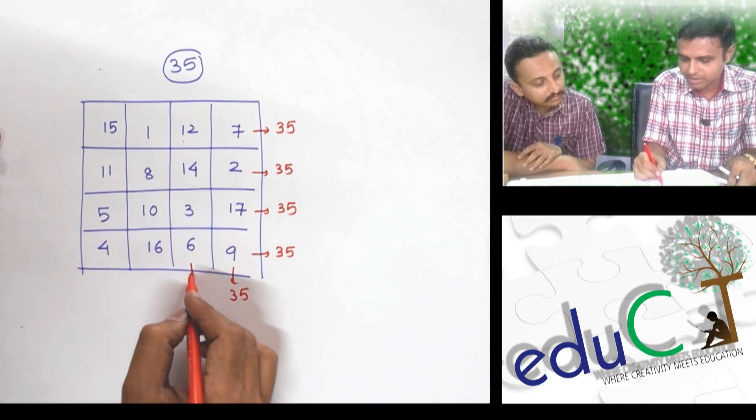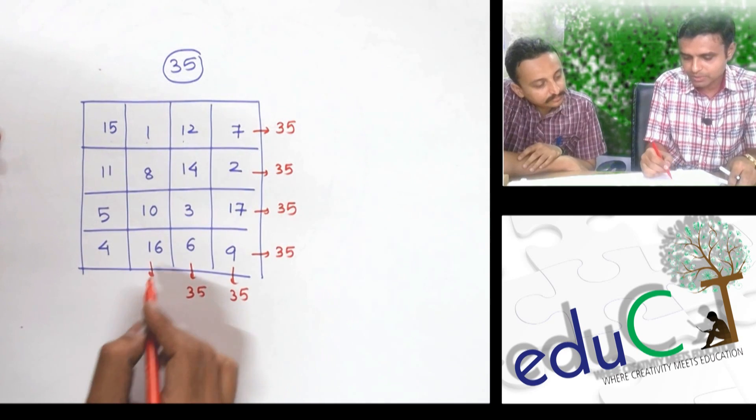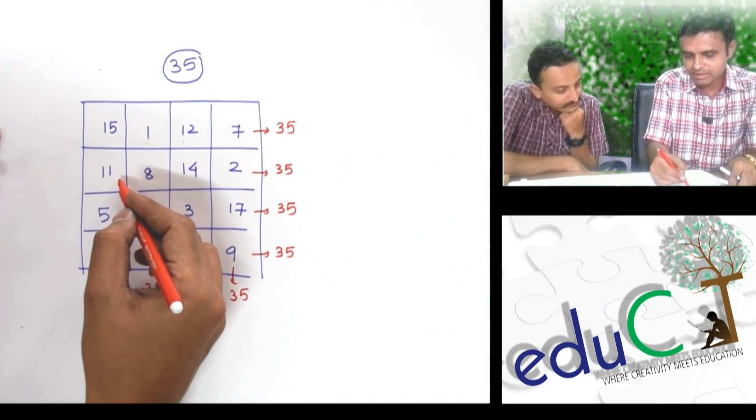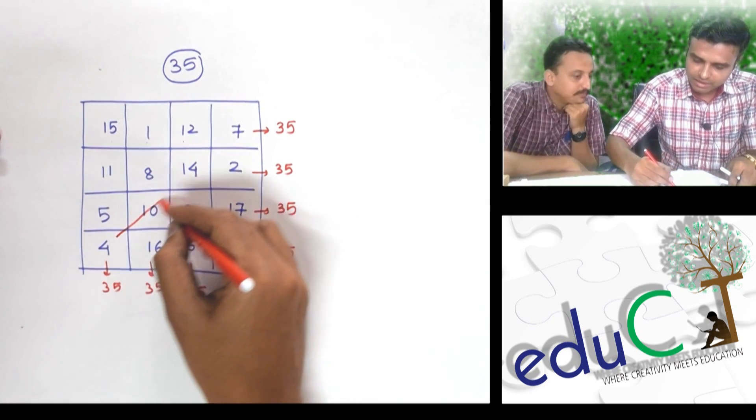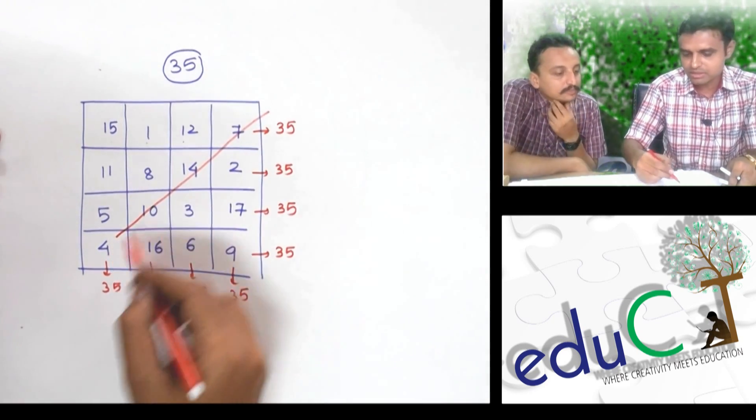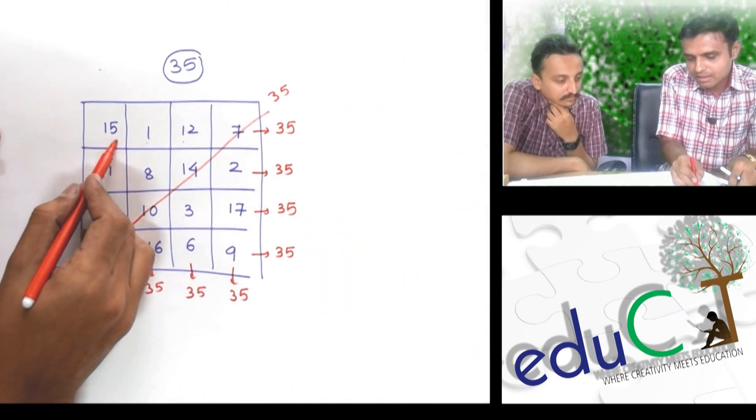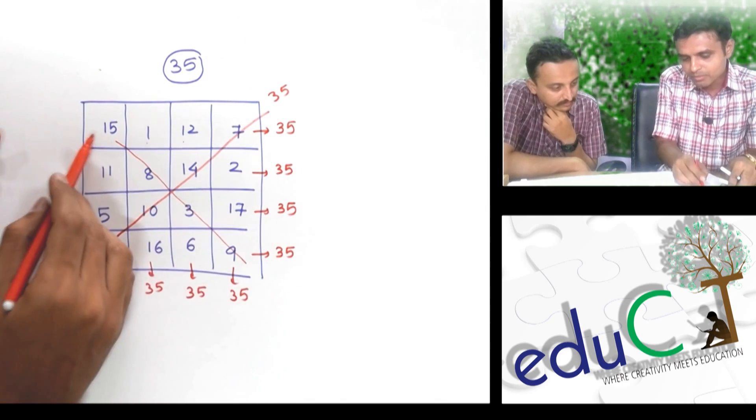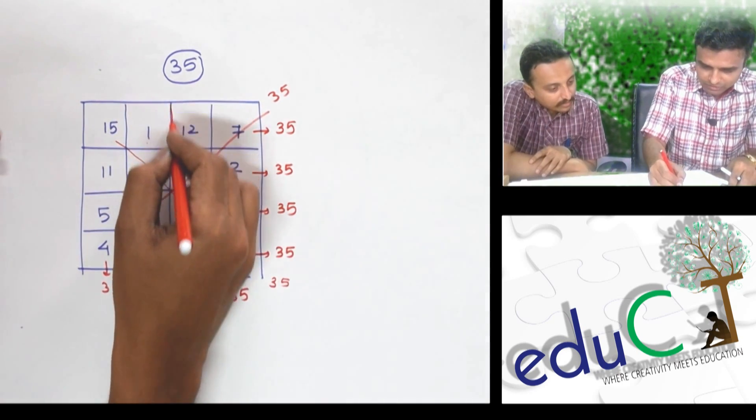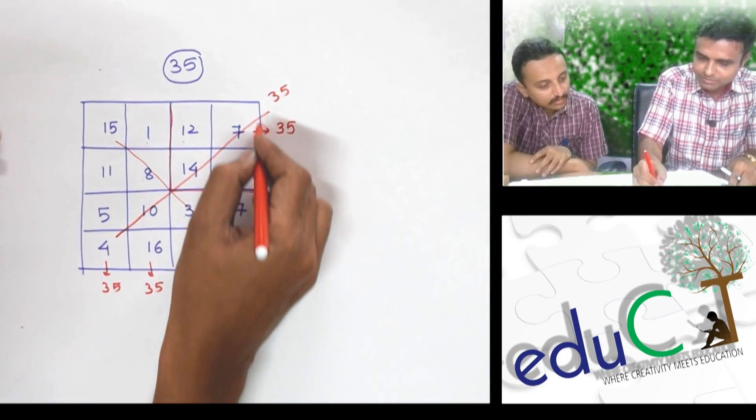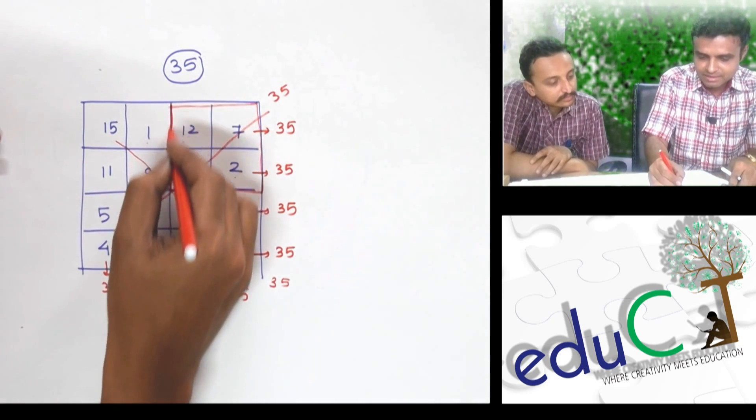15, 11, 5, 4, 35. 1, 8, 10, 16, 35. 12, 14, 3, 6, 35. 7, 2, 17, 9, 35. 15, 8, 3, 9, 35. 1, 14, 17, 3, 35. 12, 2, 10, 6, 35. 7, 10, 5, 13, 35.